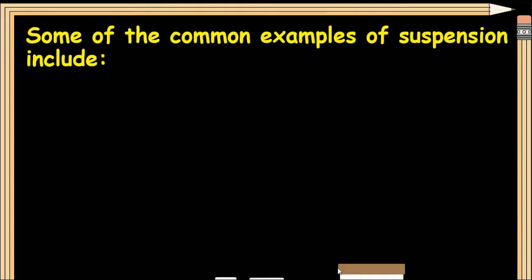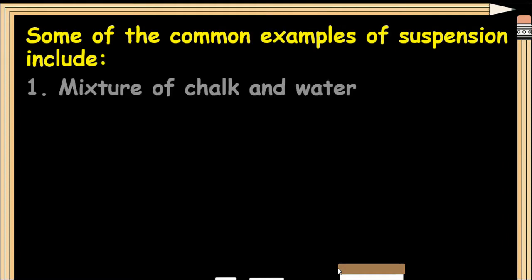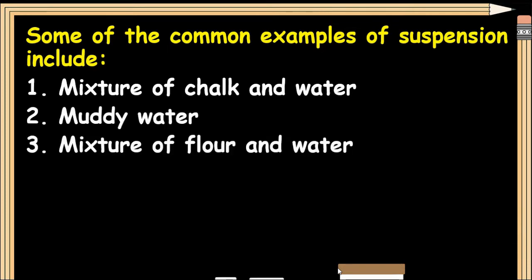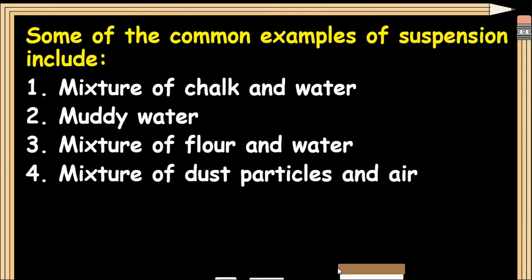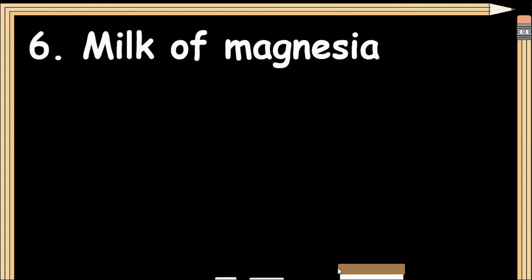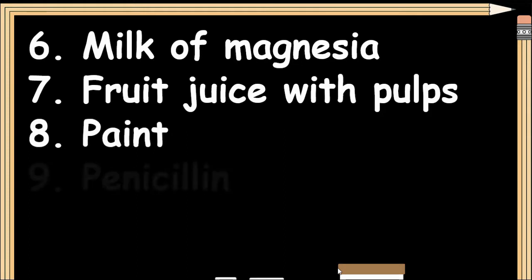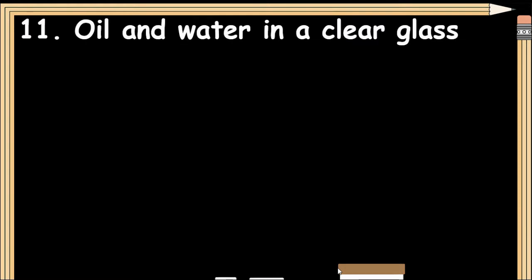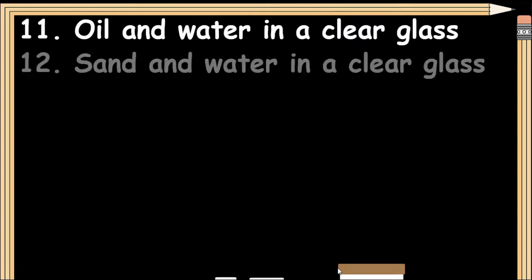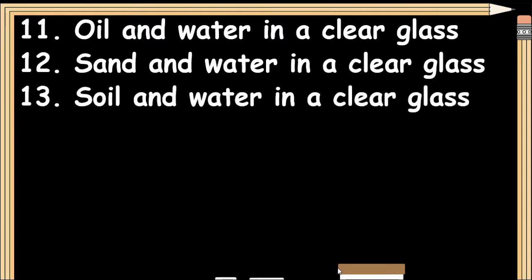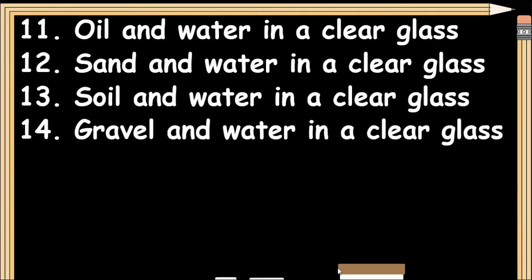Some common examples of suspension include: mixture of chalk and water, muddy water, mixture of flour and water, mixture of dust particles in air, amoxicillin, milk of magnesia, fruit juice with pulp, paint, penicillin, cereal milk, oil and water in a clear glass, sand and water in a clear glass, soil and water in a clear glass, and gravel and water in a clear glass.